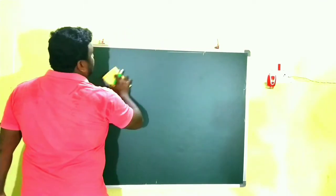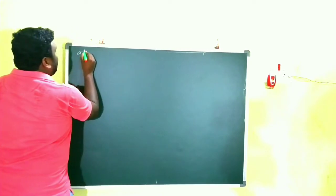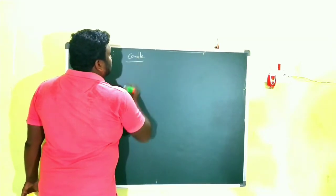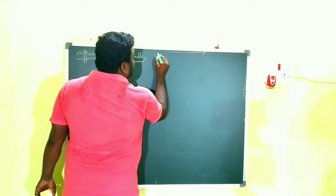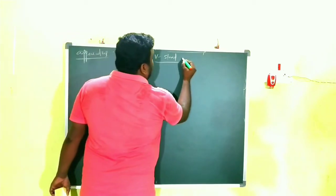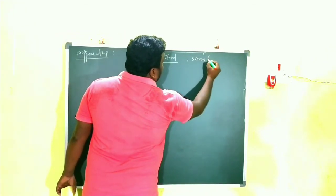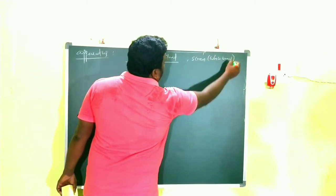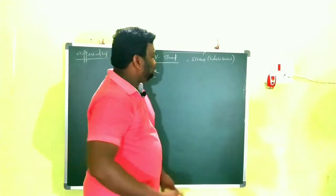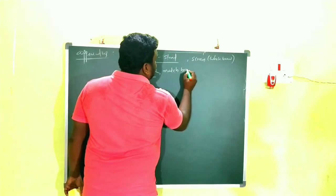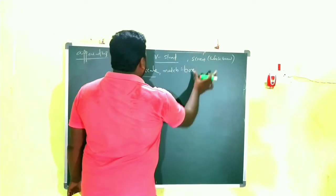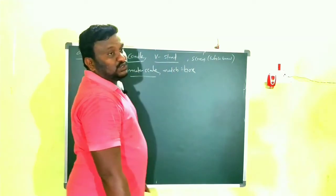For this activity, the apparatus required is: a candle — we will use the candle as the object; a V-shaped stand to hold the convex lens; one screen, which may be white paper or cardboard; a meter scale; and a matchbox. These are all the apparatus required.